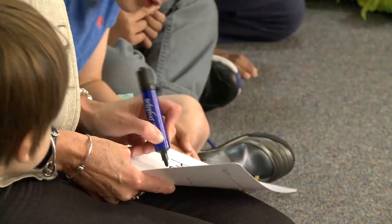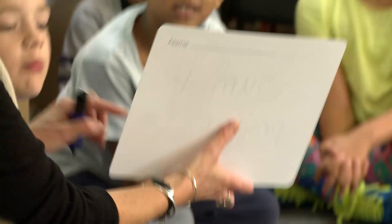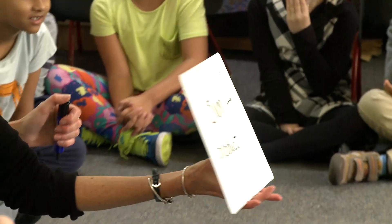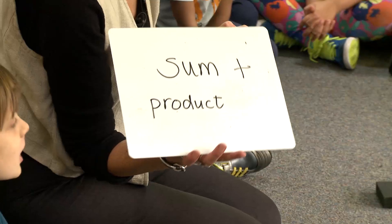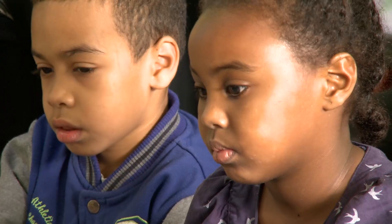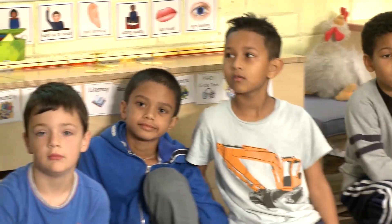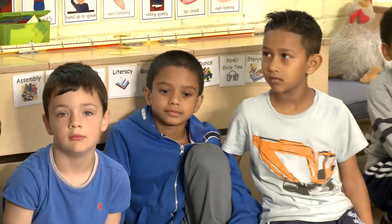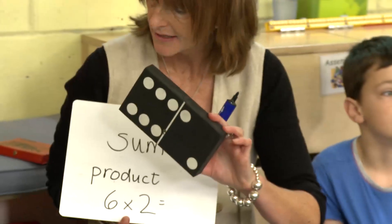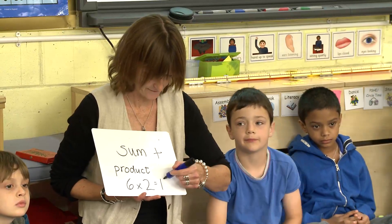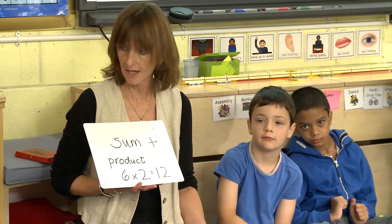Here is a new word — can you all say that as it goes round? Product. You have to do this operation: you do six times two. So the product of six and two is? Six times two is? Lily — twelve. Twelve. Did you get the idea?